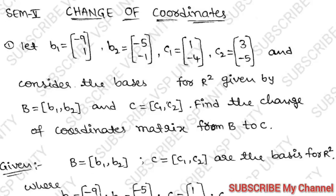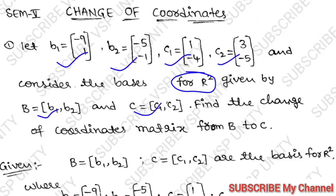In this question, let B1, B2, C1, C2 — four matrices are given. Consider the basis for R-squared given by B equal to {B1, B2} and C equal to {C1, C2}. R-squared means two dimensions.